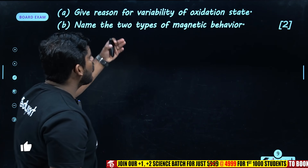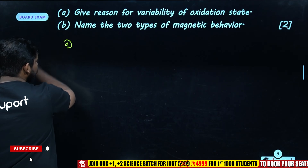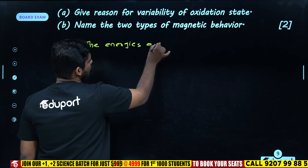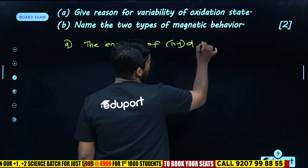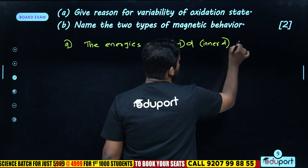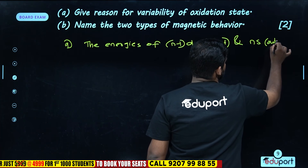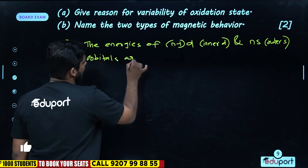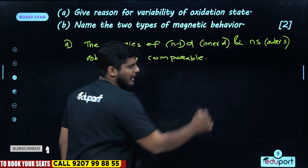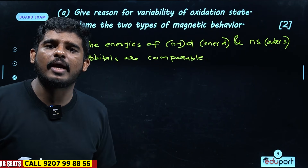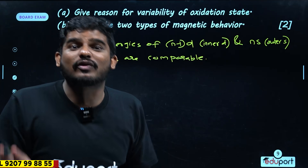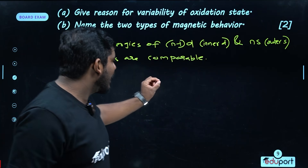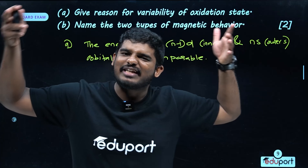Next question: give a reason for variability in oxidation state. The energies of the inner (n-1)d and outer ns orbitals are comparable. So both sets of electrons can take part in oxidation states and can participate in chemical reactions. Therefore, transition elements exhibit variable oxidation states.